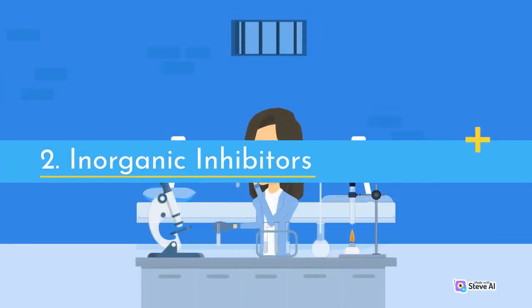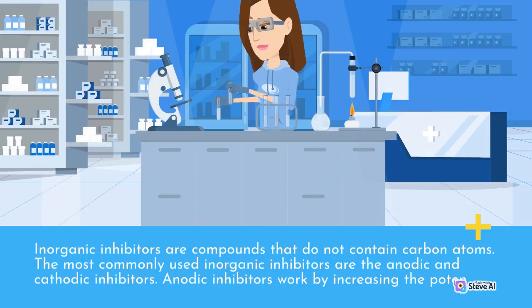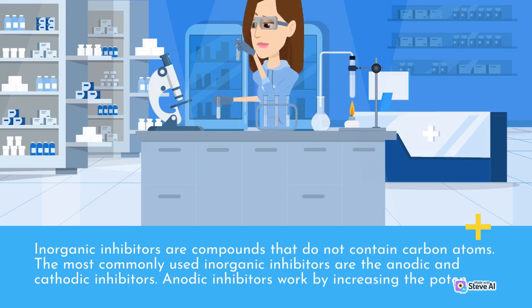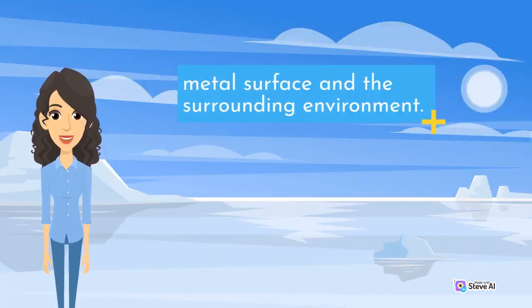Inorganic inhibitors are compounds that do not contain carbon atoms. The most commonly used inorganic inhibitors are the anodic and cathodic inhibitors. Anodic inhibitors work by increasing the potential of the metal surface, while cathodic inhibitors work by decreasing the potential of the metal surface. Both types of inhibitors prevent corrosion by controlling the flow of electrons between the metal surface and the surrounding environment.